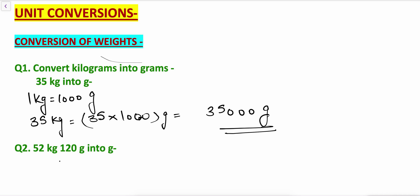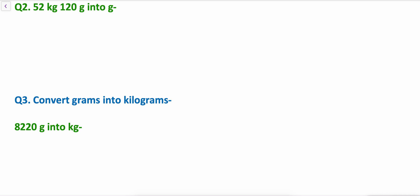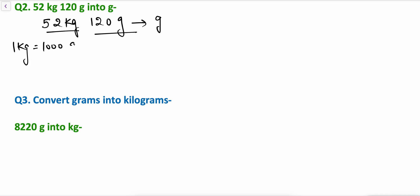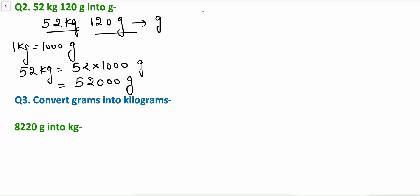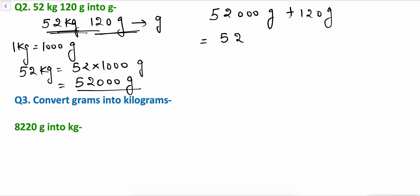Next question: convert 52 kg 120 grams into grams. Since 1 kg equals 1000 grams, 52 kg will be 52 multiplied by 1000 grams, which equals 52000 grams. So 52 kg 120 grams equals 52000 grams plus 120 grams, which is 52120 grams. This is the conversion.